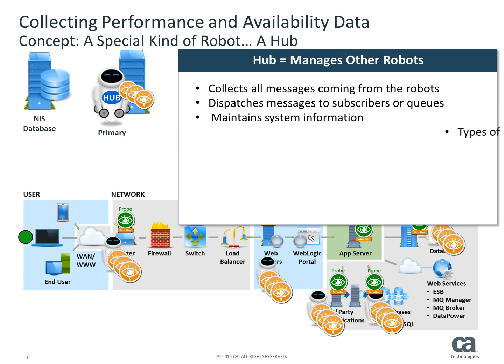There are different types of hubs depending upon their purpose. The primary hub communicates with a NIS database. Every deployment has one, and only one, primary hub. This hub is created when you install the UIM server software. Secondary hubs can be used to group robots according to function, geographical location, departmental code, or other criteria. Although secondary hubs are optional, almost all deployments have them. Secondary hubs are created after the UIM server software is installed and can be created or removed as needed. A failover hub is a secondary hub that performs the primary hub's actions if the primary hub is unavailable.